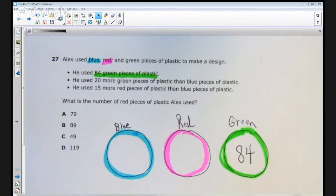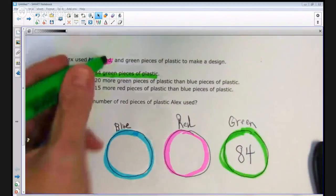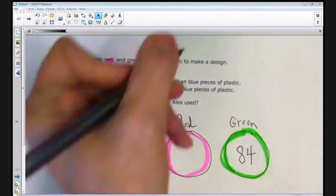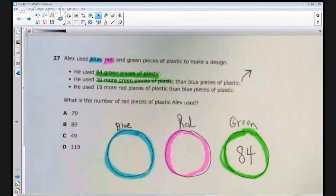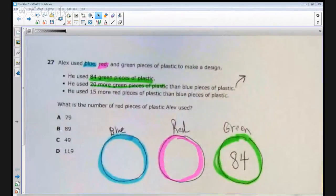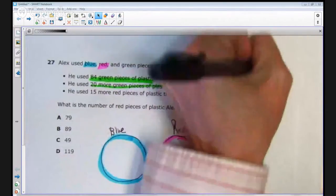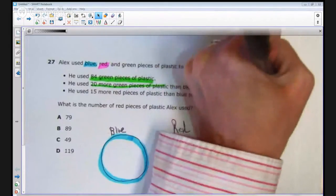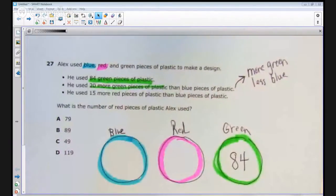It says he used 20 more green pieces of plastic than blue. The short way to say that, and leave out all the numbers, is there is more green than there is blue. So, we're going to say more green, less blue. More green, that's kind of shorthand for that statement. There's more green pieces and less blue pieces, and the difference is 20 because there's 20 more green pieces of plastic than blue pieces of plastic.